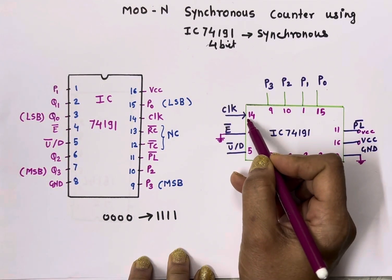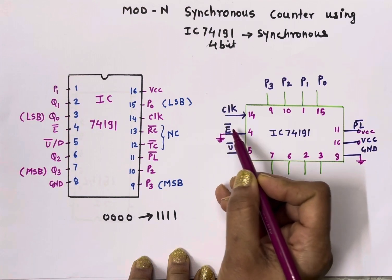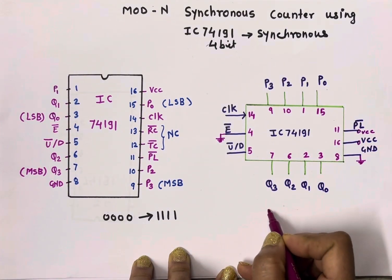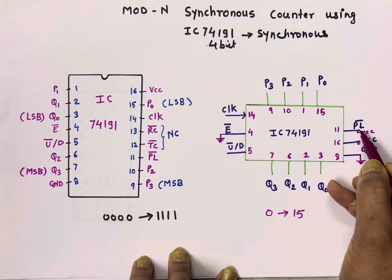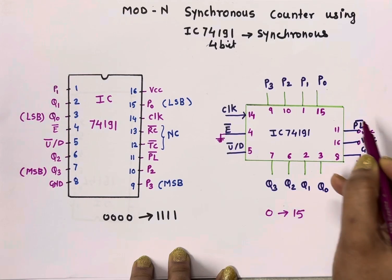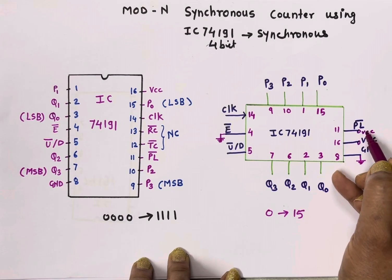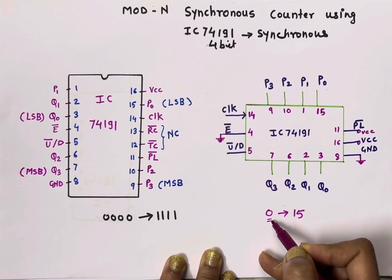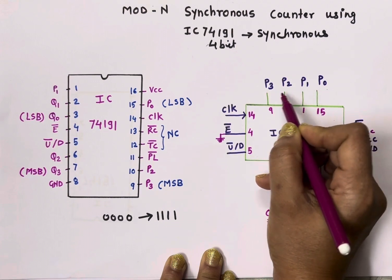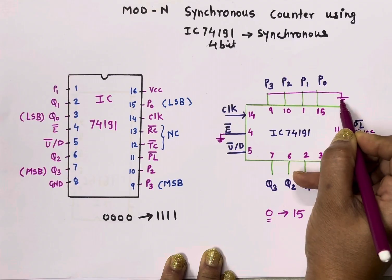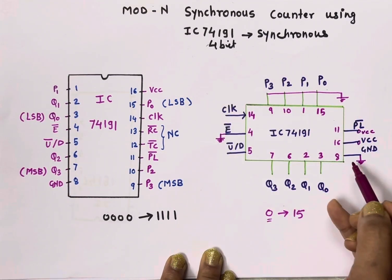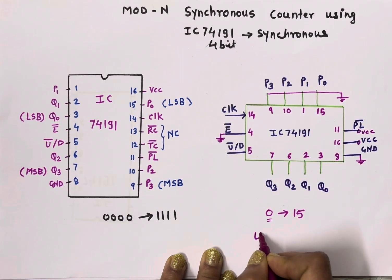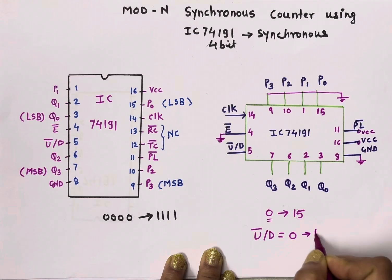The external clock connects to pin number 14. The enable pin is connected to ground because it is active low — we need to turn this IC on. To count from 0 to 15, connect the parallel load pin to VCC to keep it active high so it will not load any data in between. To start counting from 0, connect P0, P1, P2, and P3 to ground. Pin number 16 is VCC and pin number 8 is ground. To count upward, connect pin number 5 (Up-bar/Down) to 0.